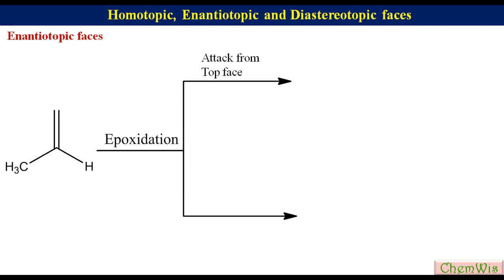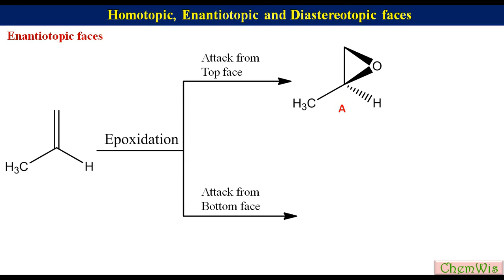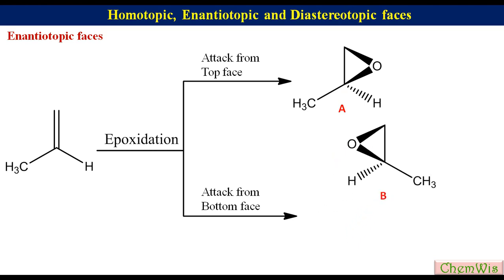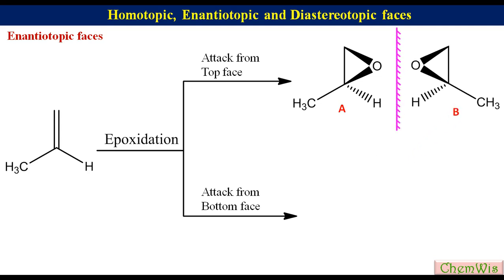For propene, if we allow it to react with an epoxidizing agent, top face attack will put oxygen above the plane leading to structure A, and bottom face attack will put oxygen below the plane leading to structure B. Structures A and B are chiral molecules with one chiral center. The absolute configuration of structure A is S and that of structure B is R, so they are enantiomers. Rotating structure B 180 degrees confirms that A and B are non-superimposable mirror images and thus enantiomers. So the two faces of the double bond in propene are enantiotopic.